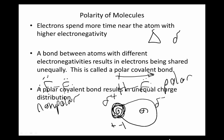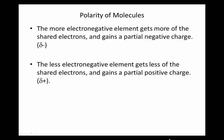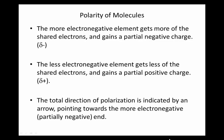So a polar covalent bond results in unequal charge distribution. And so, the more electronegative element gets a little bit of a negative. The less electronegative gets a little bit of a positive, and we show the arrow.